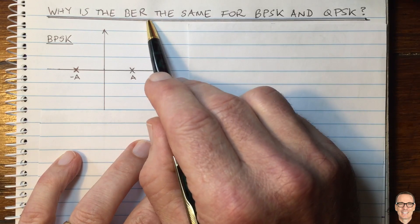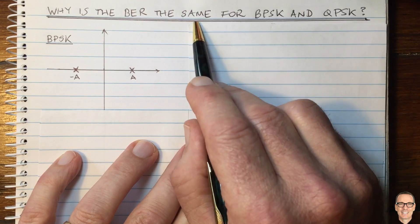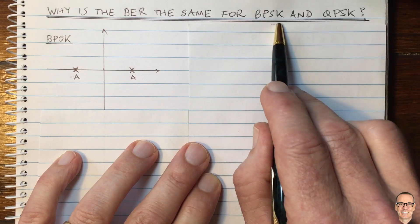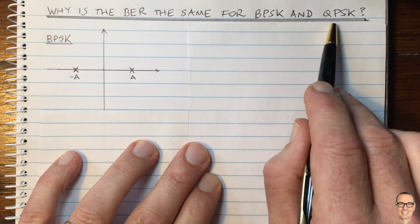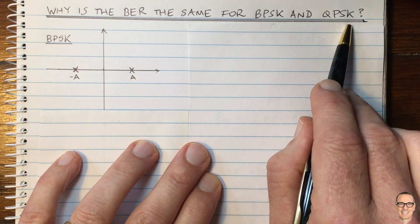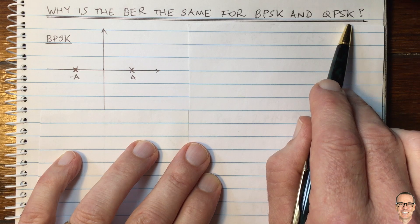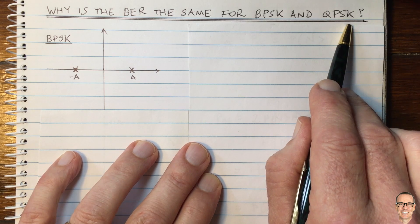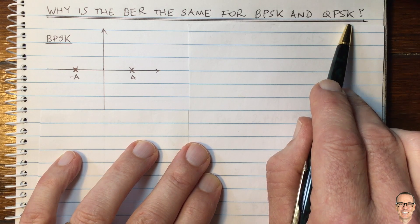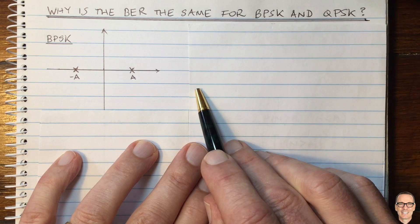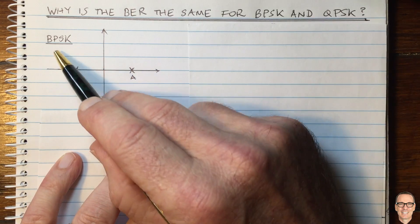Why is the bit error rate the same for BPSK and QPSK? And why is it that sometimes you see it plotted where it's not the same? Let's try to understand what's going on.